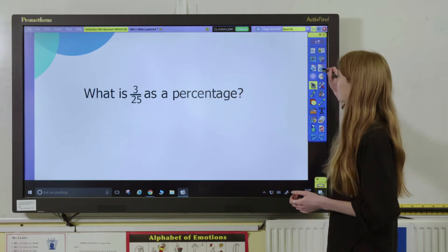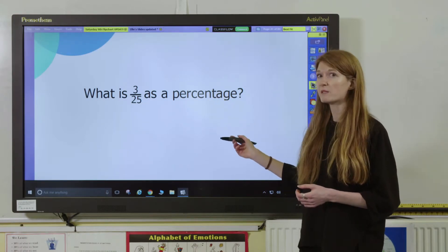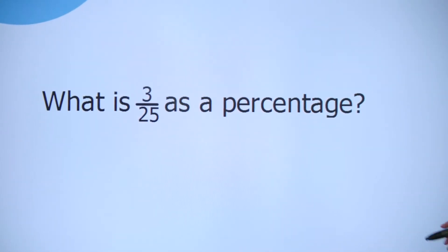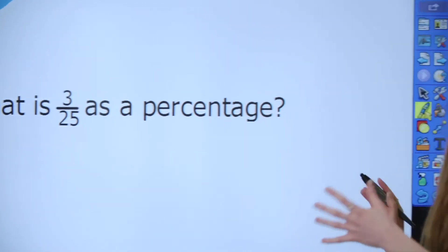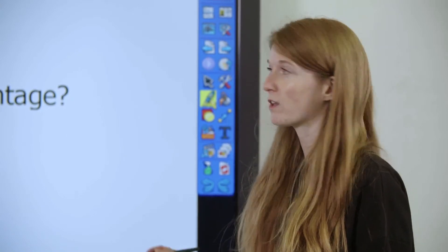Let's have a look at another example, which is 3 25ths as a percentage. And pupils could try now, once they've used that 100 grid and used some visual representations, they're a bit more confident, to do this in a more abstract way by simply converting it into hundredths.